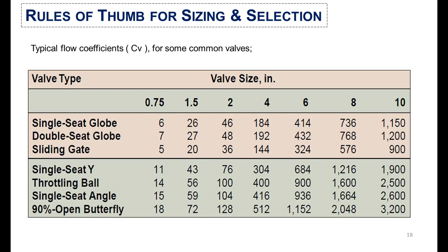Here are typical flow coefficients — Cv values — for some common valves. For example, if there is a single seat globe valve and your calculated Cv is 26, then the valve size will be 1.5 inches. Similarly, with other valve types, you can identify the valve size corresponding to your calculated Cv from the provided table.